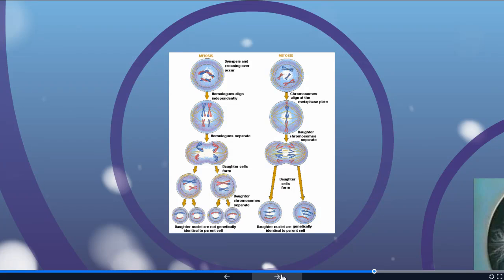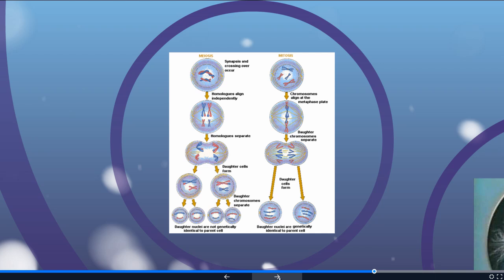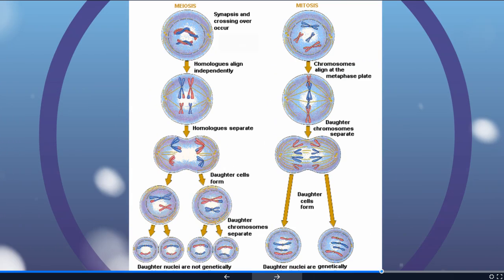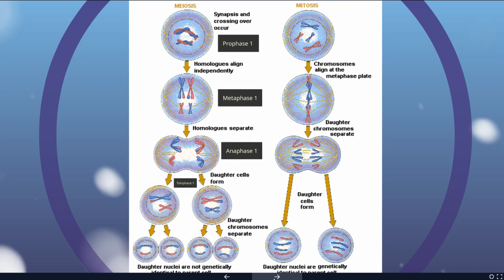This graphic is going to walk us through the steps of meiosis, and alongside I have mitosis so we can compare and contrast as we go through these different steps. Some of the same basic things are going to happen: the nucleus disappears, chromosomes become visible, lining up in the middle, pulling apart, splitting into two cells. But what I'm going to highlight is how meiosis is different from mitosis.